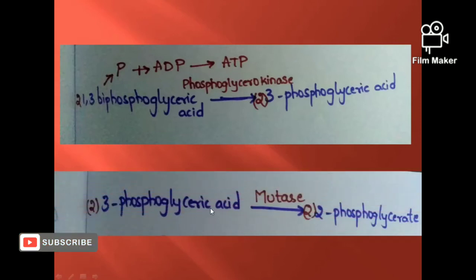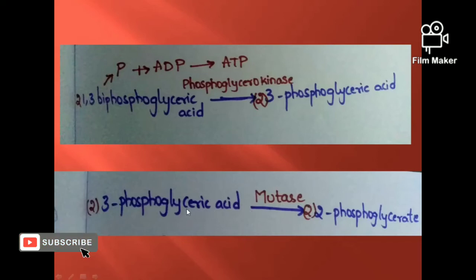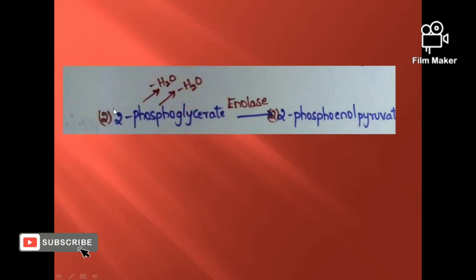In the eighth step, 2 molecules of 3-phosphoglyceric acid are converted to 2 molecules of 2-phosphoglycerate in the presence of enzyme enolase.